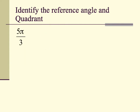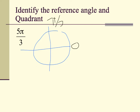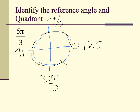Now we're into radians. Same process — we draw a circle and label it in radians: 0, pi over 2, pi, 3 pi over 2, and 2 pi all the way around. The question is where is 5 pi over 3? We know it's bigger than 1 and a little bigger than 1.5, so it's going to be in the fourth quadrant. How much less than 2 pi is 5 pi over 3? The correct answer is pi over 3. Our reference angle is pi over 3, and our quadrant is the fourth.